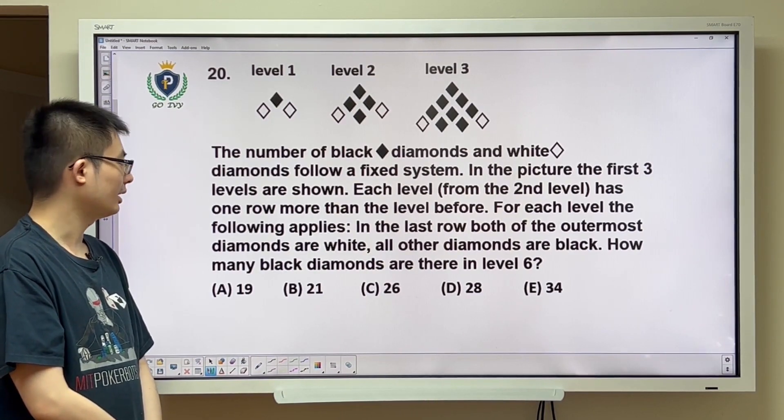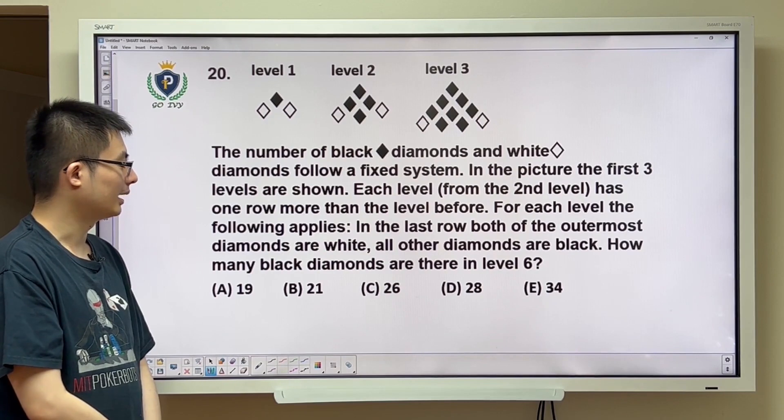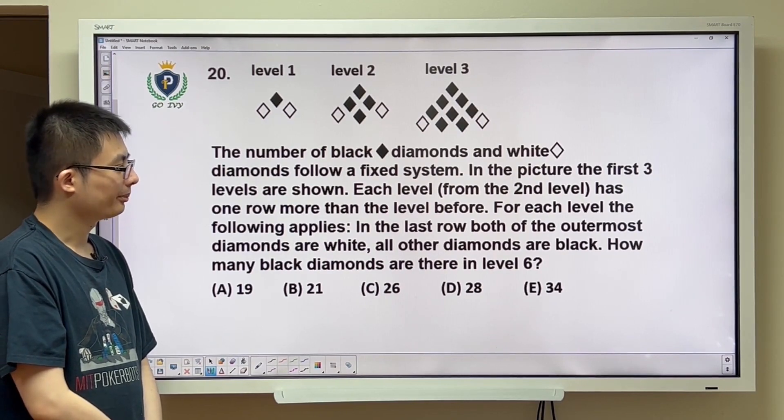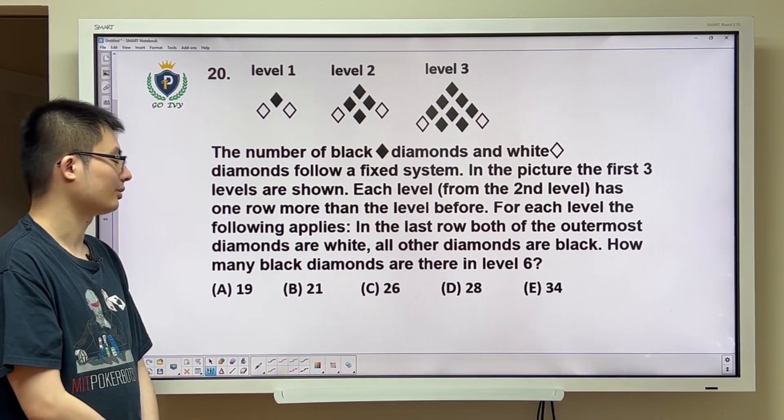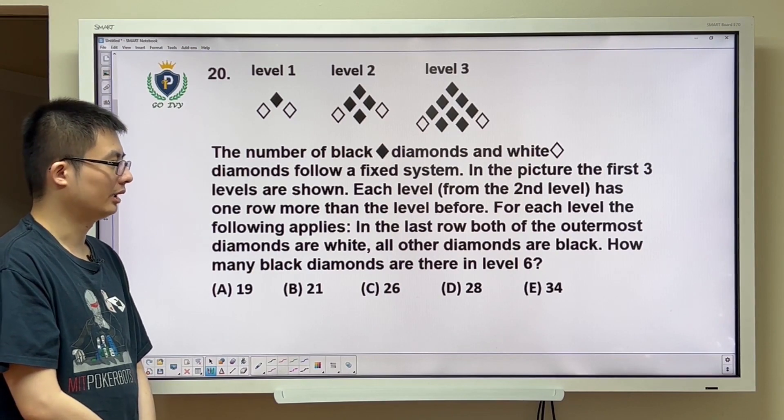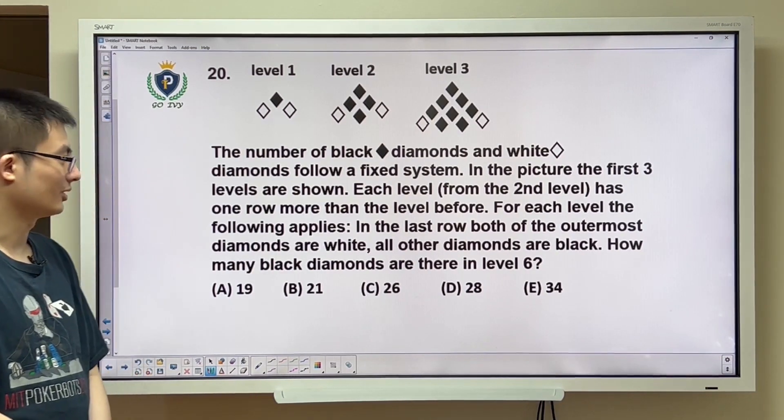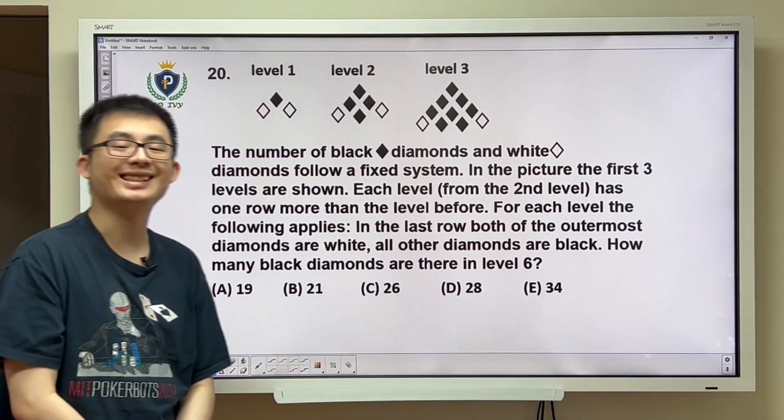Each level from the second level has one row more than the level before. For each level, the following applies: In the last row, both of the outermost diamonds are white. All other diamonds are black. How many black diamonds are there in level 6?